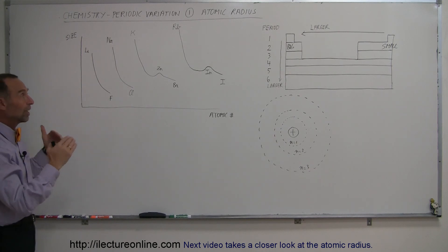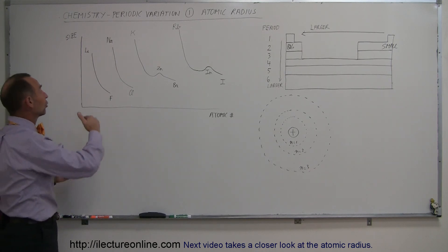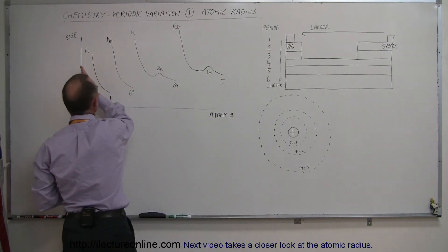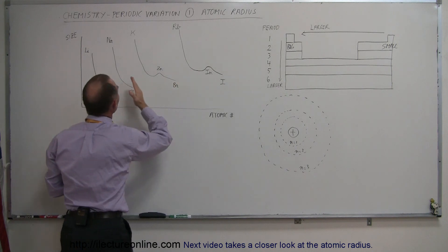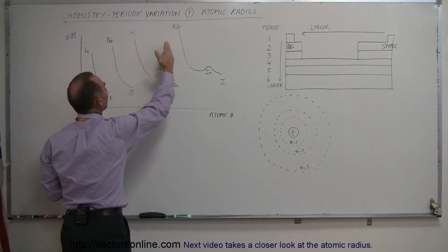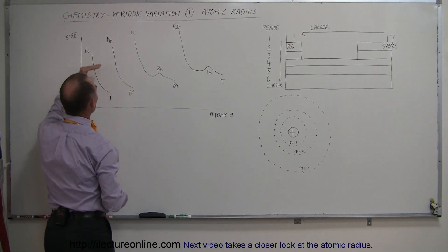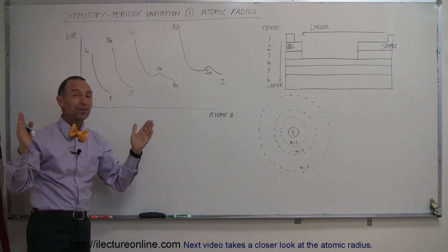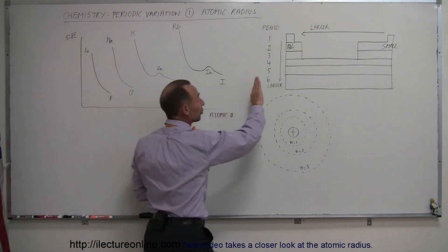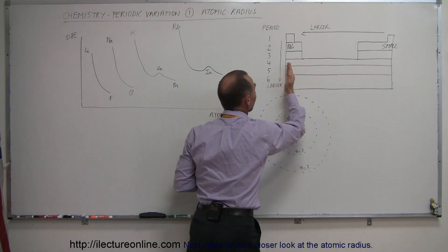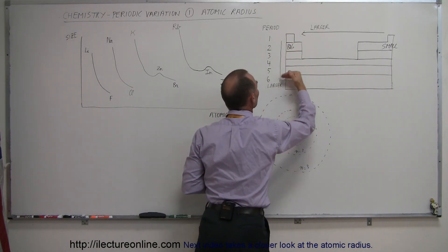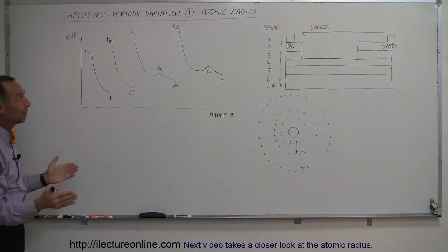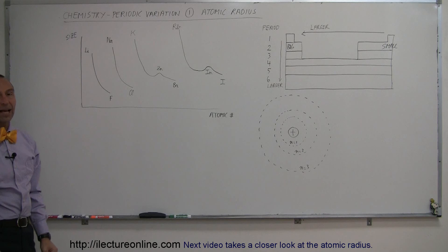The general principle is that as you go down the periodic table — which corresponds to going to the right on this chart — atoms get bigger and bigger, and as you go from left to right on the periodic table the atoms get smaller. Going to the right they get smaller, going to the left they get bigger, going down they get larger, going up they get smaller. That is the general tendency and the periodicity of the periodic table relative to atomic size.